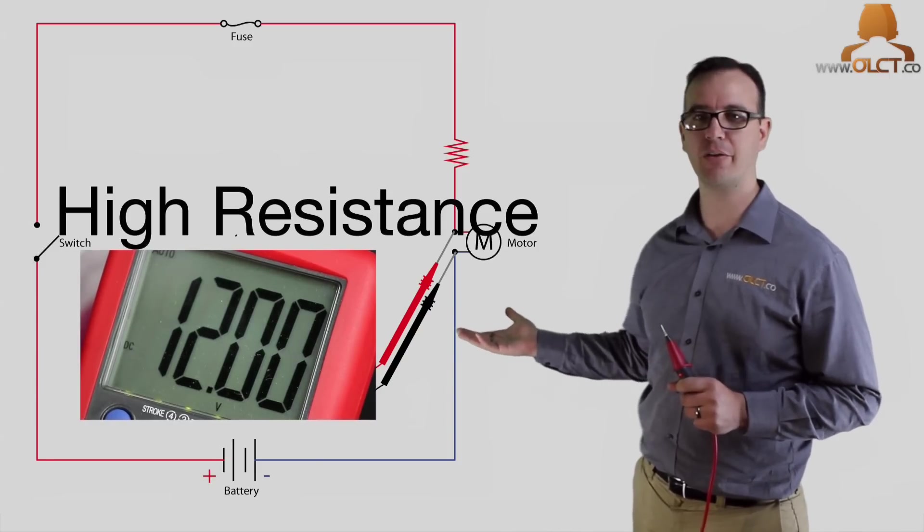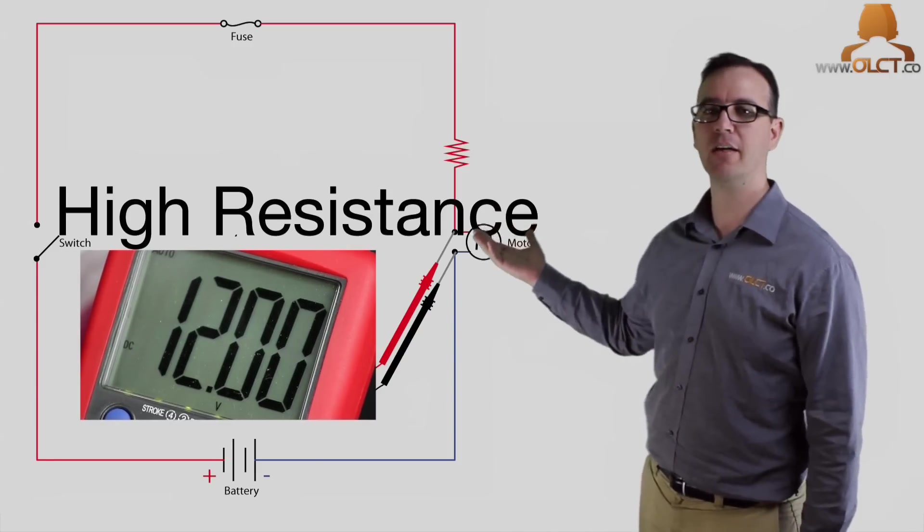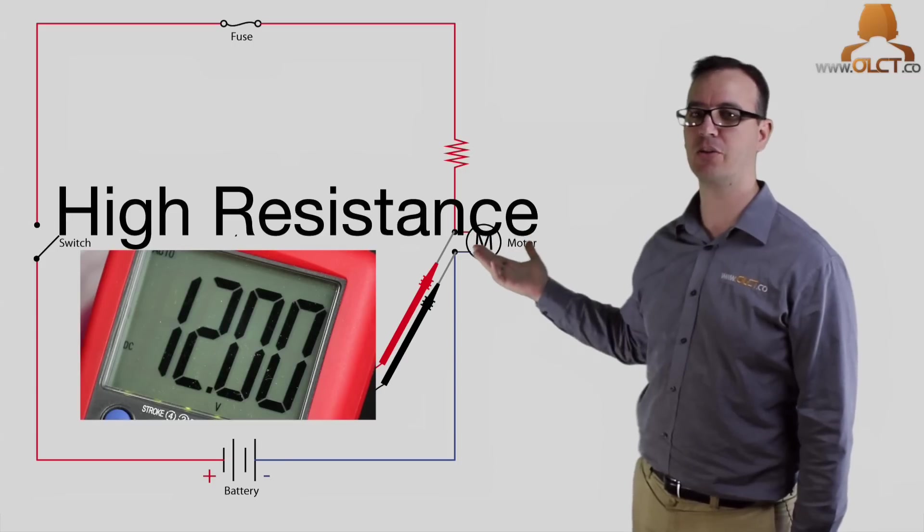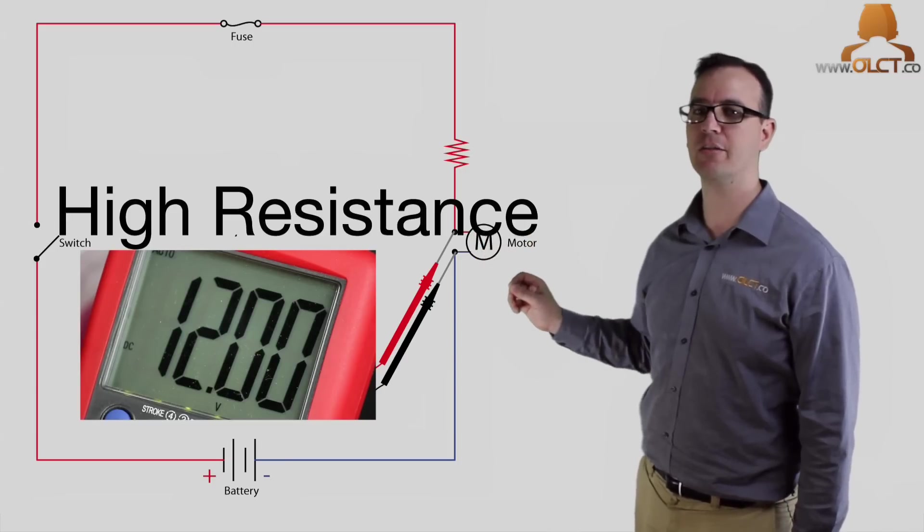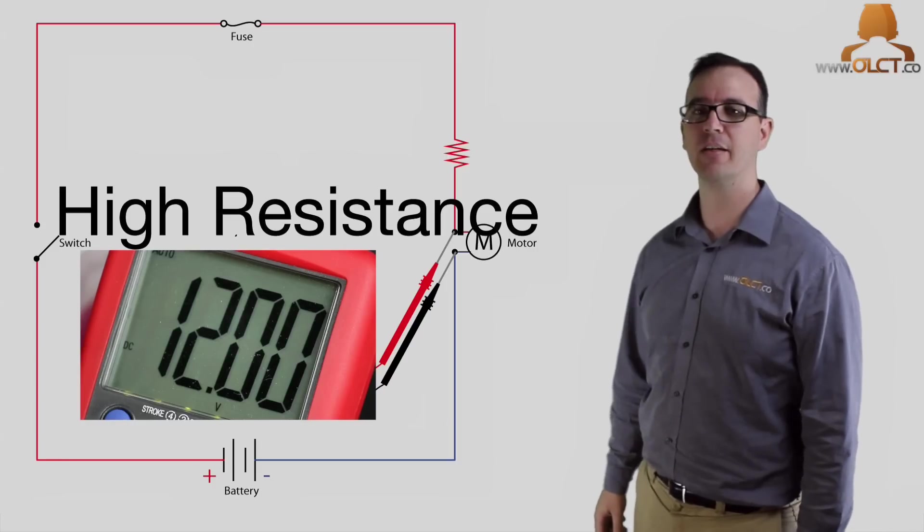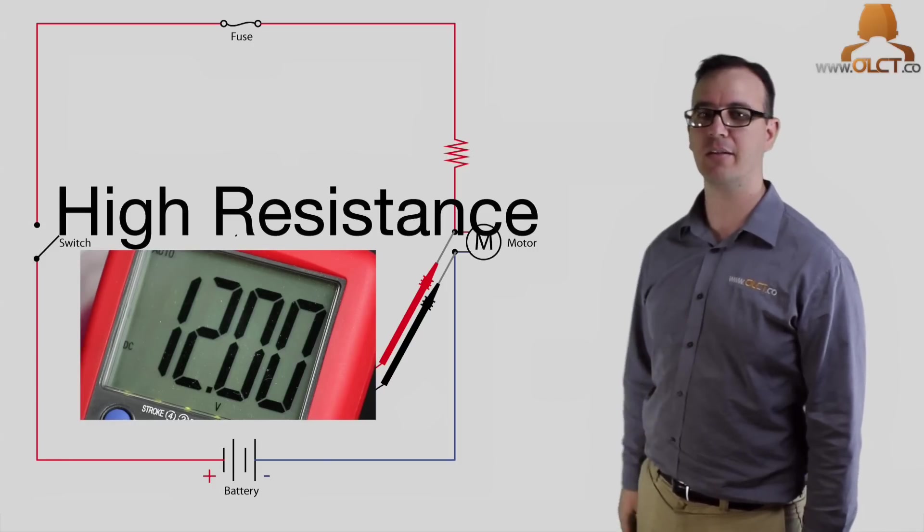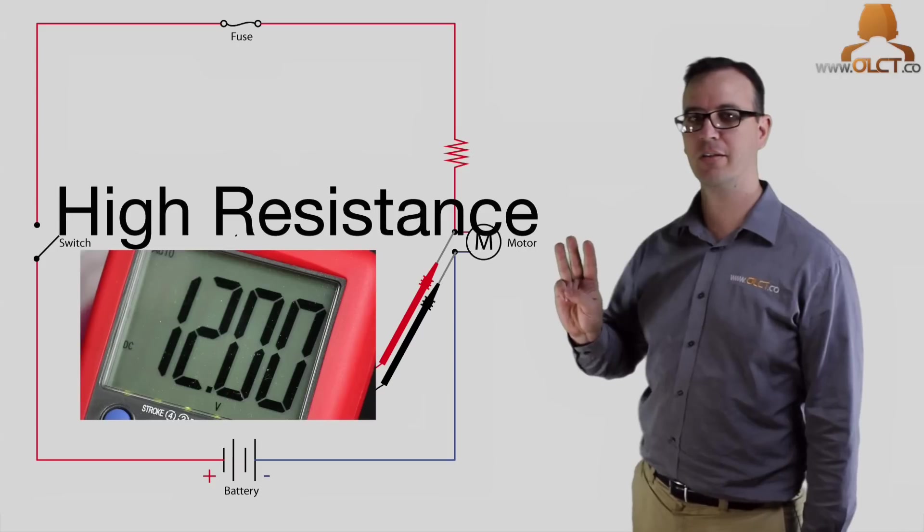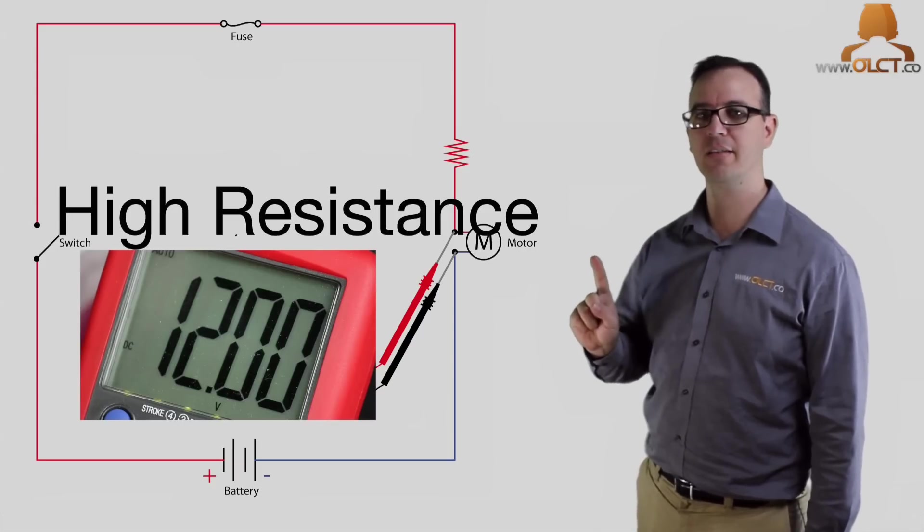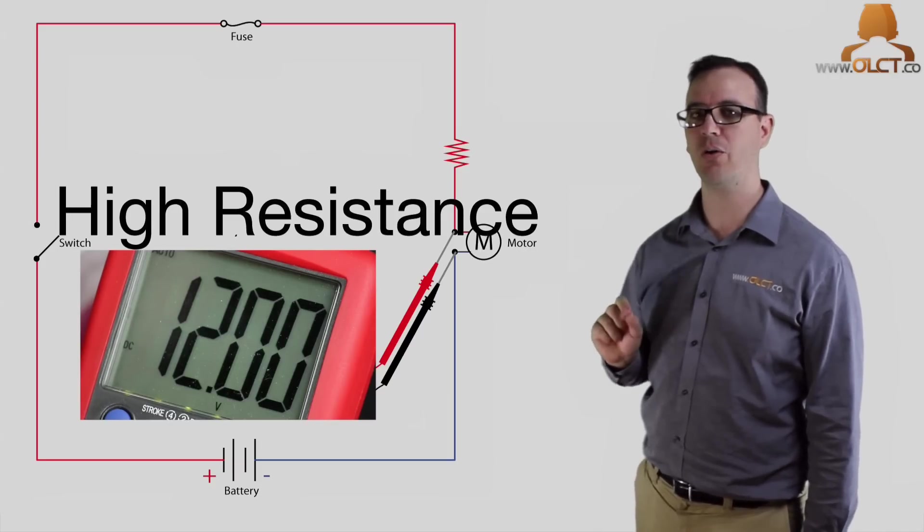It means that you don't have a wire fault at all because reading system voltage means that you can rule out opens and shorts. And performing a load test with the Load Pro and still seeing system voltage means that you can rule out high resistance. Only three faults, only one test. You can confirm or deny all of them instantly.